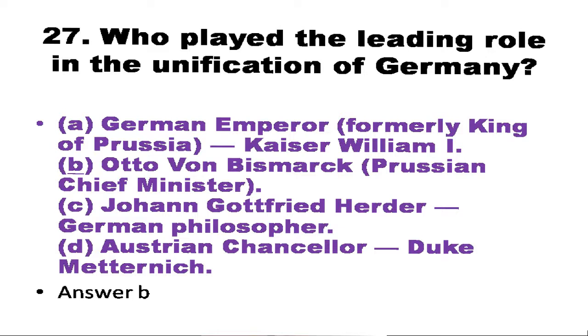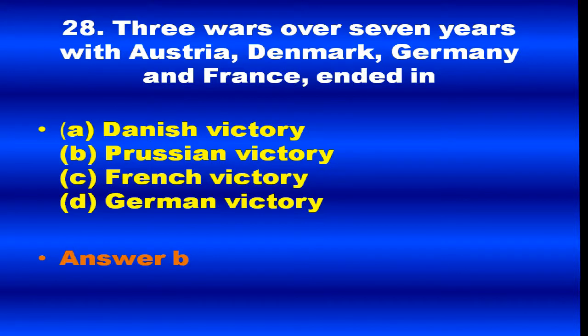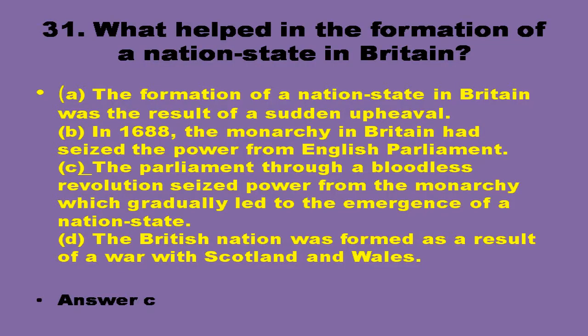Next question: Three wars over seven years with Austria, Denmark, and France ended in — it's a fill in the blanks question — the answer is Prussian victory. Next question: What helped in the formation of a nation state in Britain? The answer is the parliament through a bloodless revolution seized power from the monarchy, which gradually led to the emergence of a nation state.